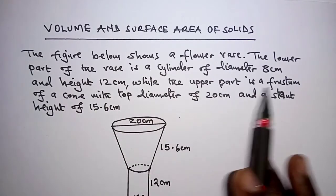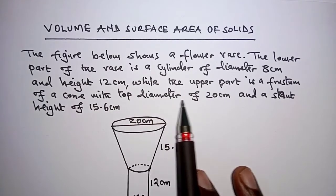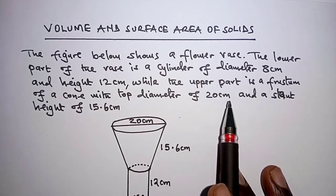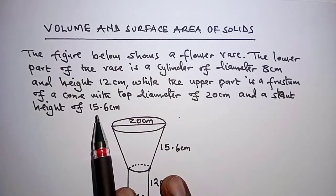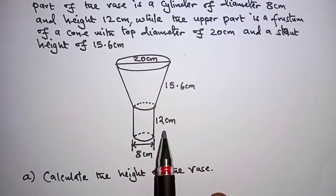While the upper part is a frustum of a cone with a top diameter of 20 cm and a slant height of 15.6 cm, just as shown in the diagram.